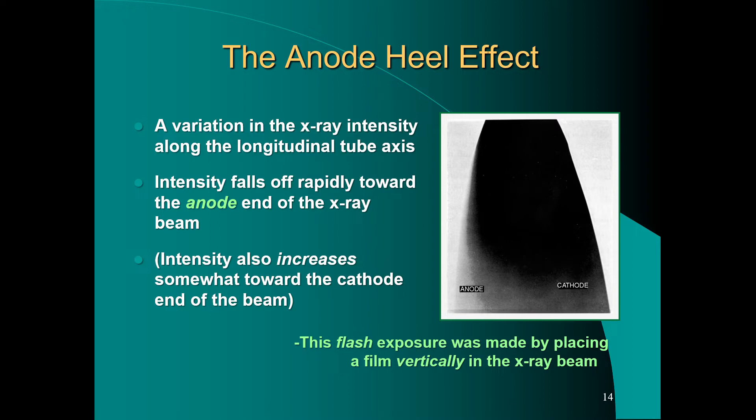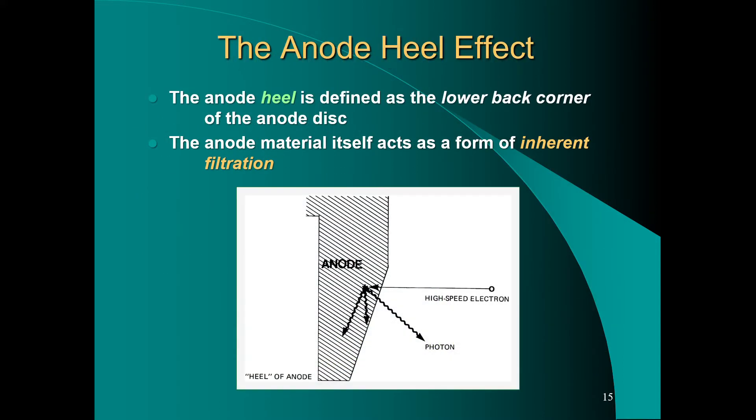X-ray intensity falls off rapidly towards the anode end of the beam and increases slightly toward the cathode end, measured from the central ray. To demonstrate this, a flash exposure is made by placing the film vertically on the tabletop arranged along the long axis of the table.